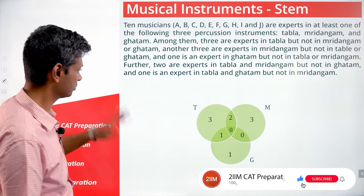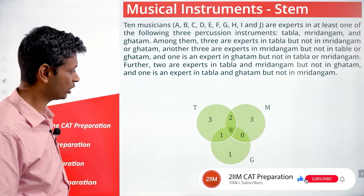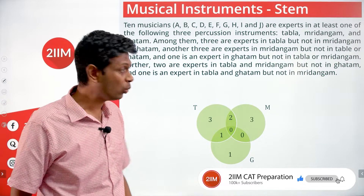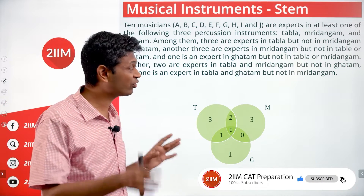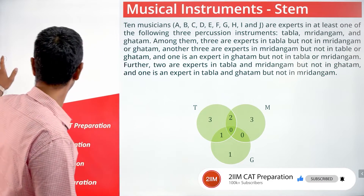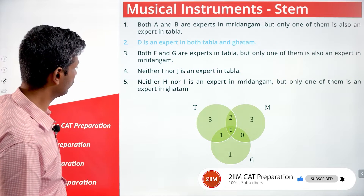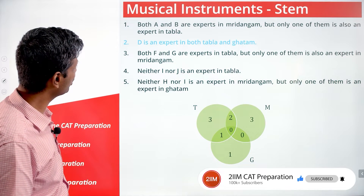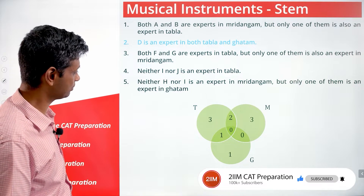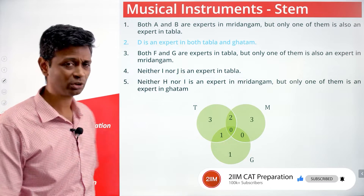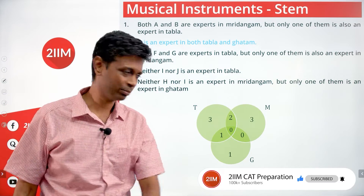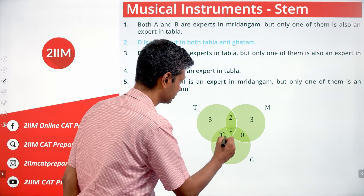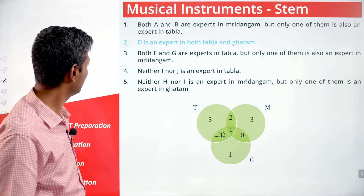Placing the numbers: three, two, three, one, zero, zero, one. Now for the people. D is an expert in both Tabla and Ghatam — there's only one person in that intersection, so D goes there. Done.